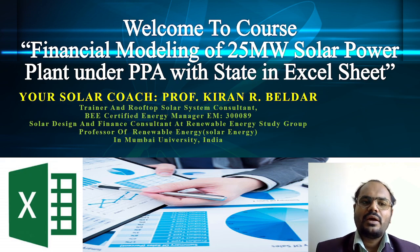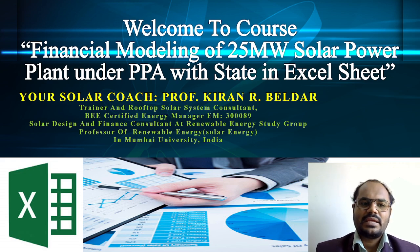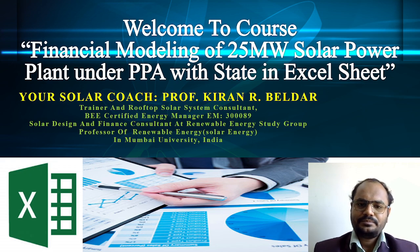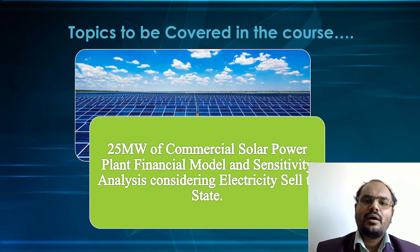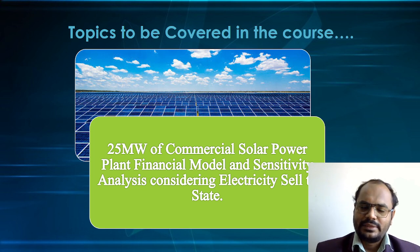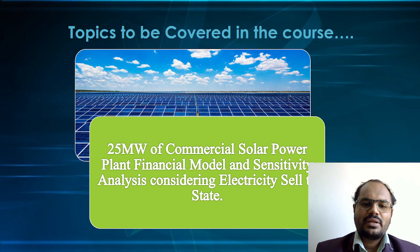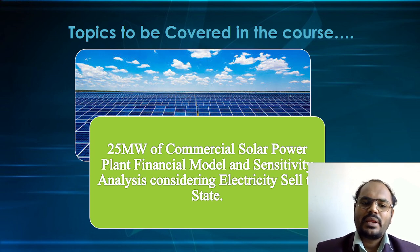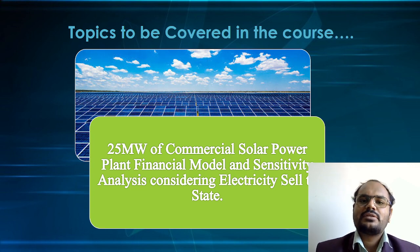In this course, we are going to be talking about how we can develop the financial model for a 25 Megawatt solar power plant, where we are selling this electricity to the state DISCOM or any specific state that wants to purchase solar electricity under a particular PPA — that is, a Power Purchase Agreement tariff. We will be calculating detailed parameters like internal rate of return, net present value, equity turnaround the project, and also the payback period.